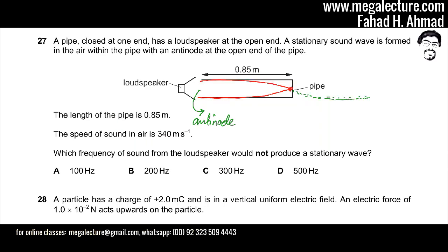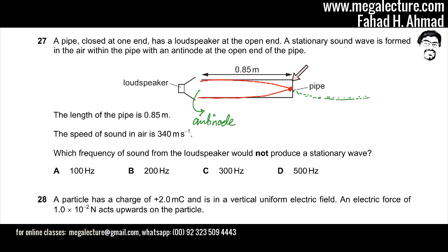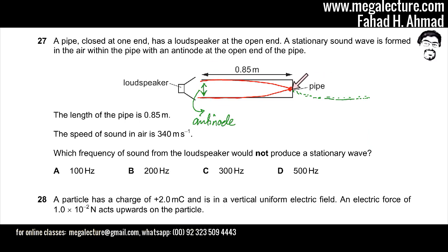For a stationary wave to form, there must be a node at the closed end of the pipe. Consider a wave traveling through the pipe — it hits the closed end and gets reflected back. Particles at the closed end have maximum vibration in the incident wave, but when the reflected wave returns, they cancel out, forming a node at the closed end. The open end has an antinode where particles vibrate vigorously.